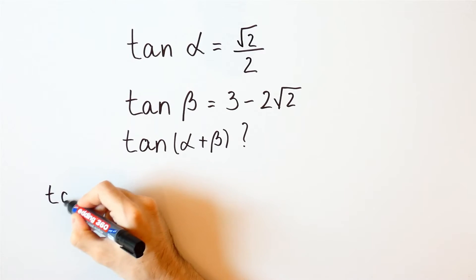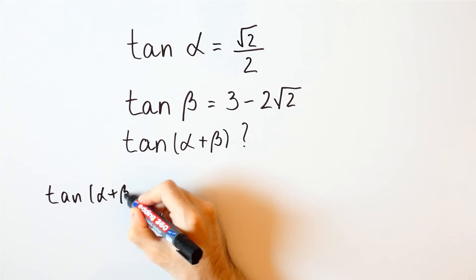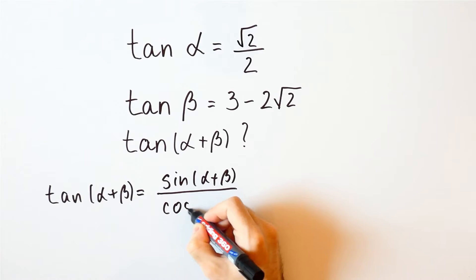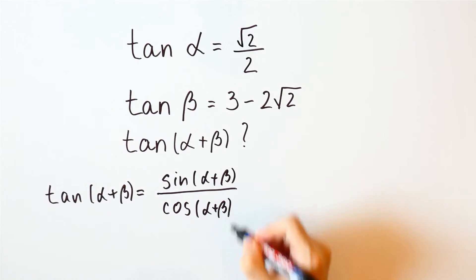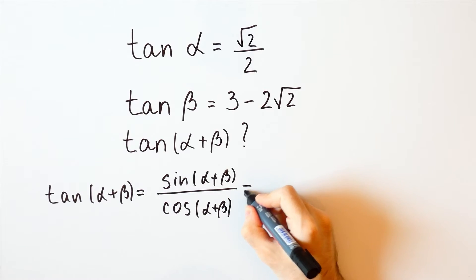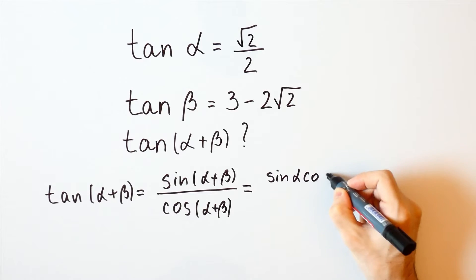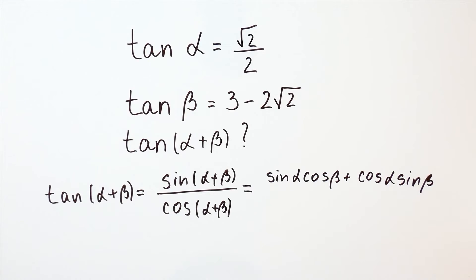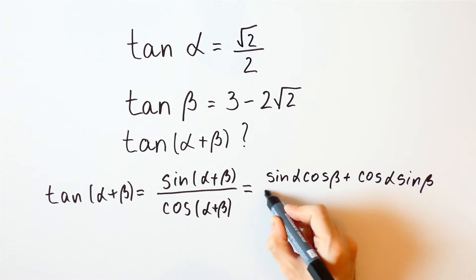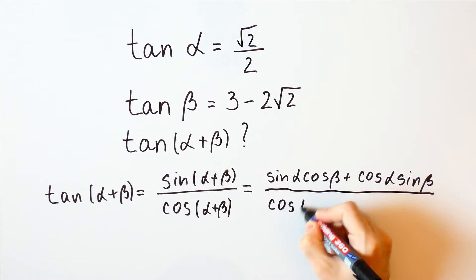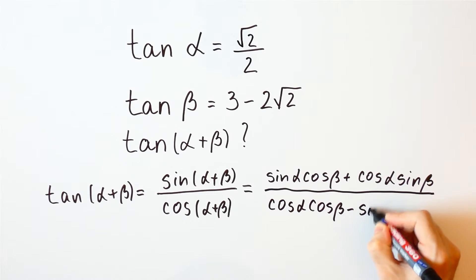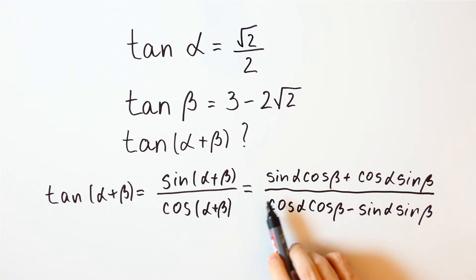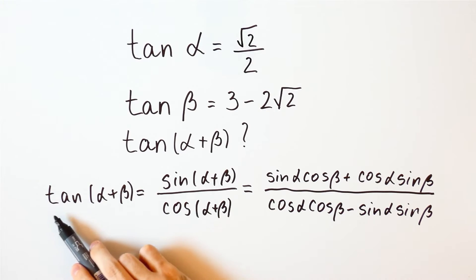The tangent of alpha plus beta is equal to the sine of alpha plus beta over the cosine of alpha plus beta. The sine of alpha plus beta is equal to the sine of alpha times the cosine of beta plus the cosine of alpha times the sine of beta. And the cosine of alpha plus beta is equal to the cosine of alpha times the cosine of beta minus the sine of alpha times the sine of beta. So if we know the sines and the cosines of alpha and beta, we can calculate the tangent of alpha plus beta.